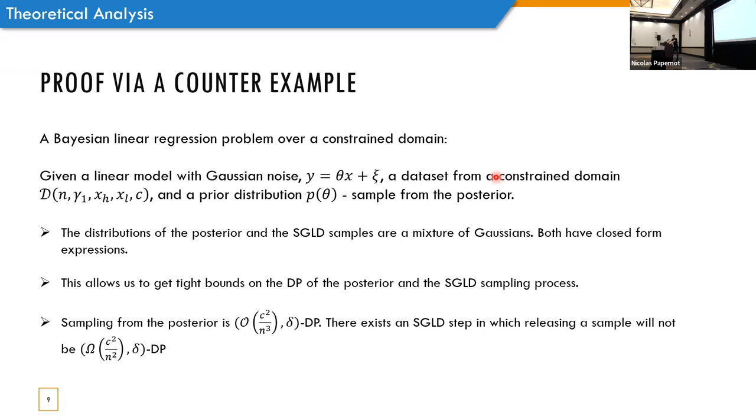Okay, so how did we prove this theorem? We need to get tight bounds over the differential privacy, and one way to do so is to directly analyze the distribution of the samples. So, this is hard in the general case. So, to circumvent this problem, we looked on a Bayesian linear regression problem over a constraint domain. So, this is the problem, given a linear model with Gaussian noise, a data set from a constraint domain, and a prior distribution we would like to sample from the posterior.